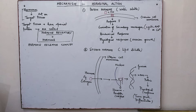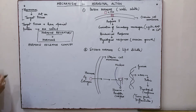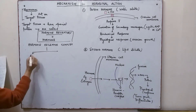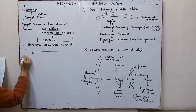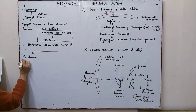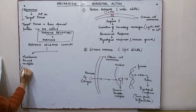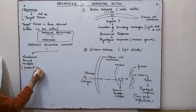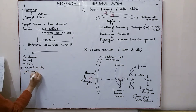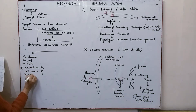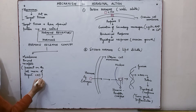The hormone-receptor complex is of two types when classified depending upon position with respect to the cell. Certain hormone receptors are present on the cell membranes of target cells, while some receptors are present inside the target cells. Those present on the cell membrane are known as membrane-bound receptors.